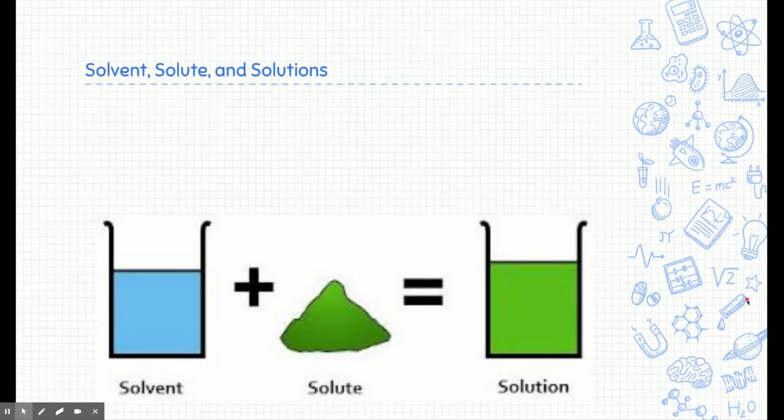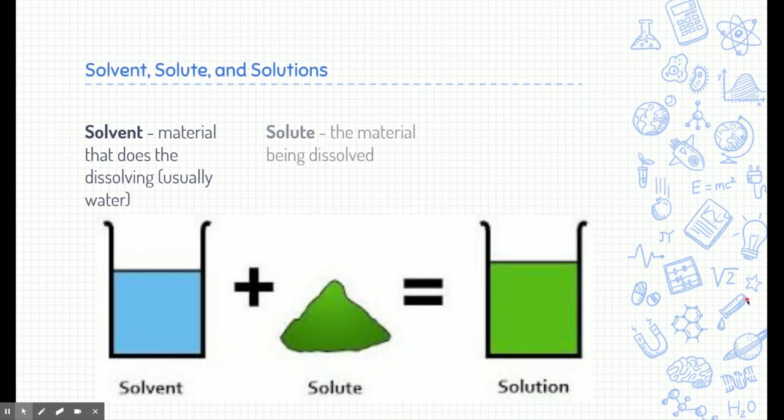In order to talk about a solution, we need to know what a solution is made out of. Solutions are made out of solvents and solutes. The solvent is the material that dissolves a solute, and the solute is the material that is being dissolved. Think of a solution like a drink mix — the solvent is the water, the solute is the drink powder, and when you mix them together, you create a solution.